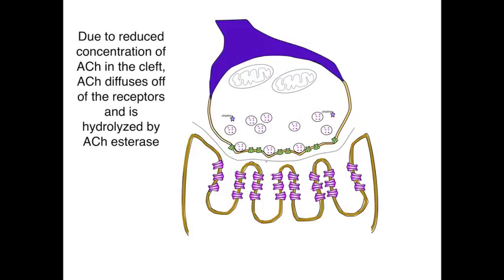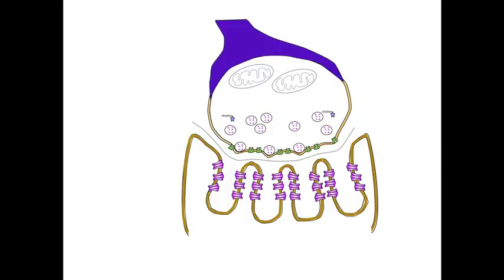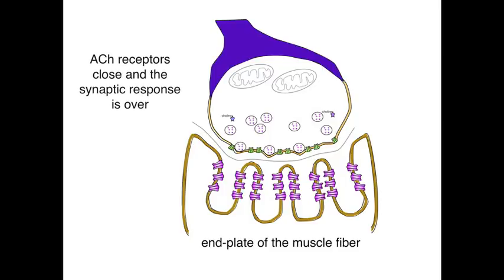Due to the reduced concentration of acetylcholine in the cleft, acetylcholine diffuses off of the receptors and is hydrolyzed by the acetylcholinesterase. The acetylcholine receptors close and the synaptic response is over. And those are the basic events that occur during synaptic transmission at the neuromuscular junction.